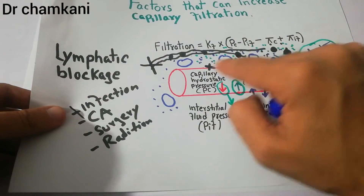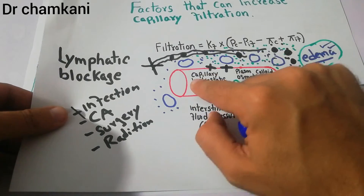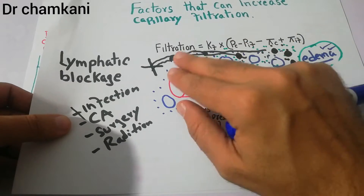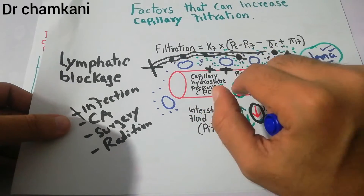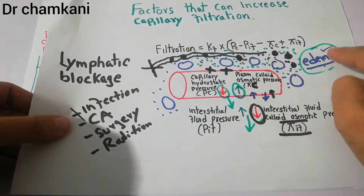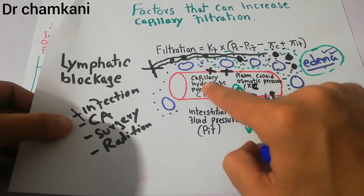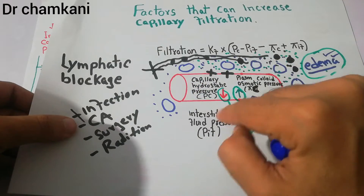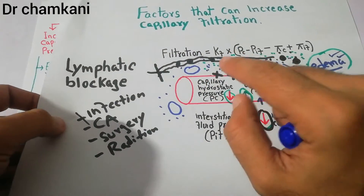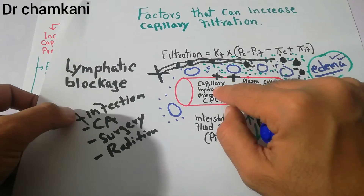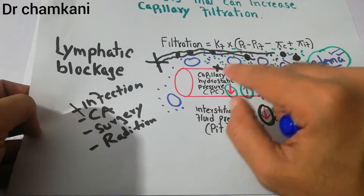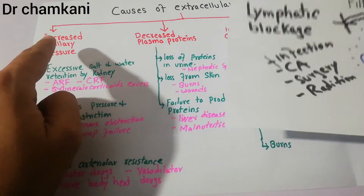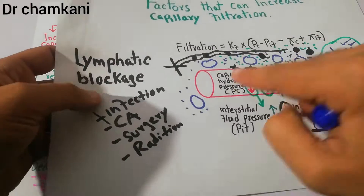Depending upon these forces, if they are normally acting, some fluid will be going out and some will be coming into the capillary, and there will be a normal amount of fluid in the interstitium. But if there is excess fluid in the interstitium, it will be labeled as edema. This excess fluid occurs when these forces are disturbed. First, we will discuss the increased capillary pressure.